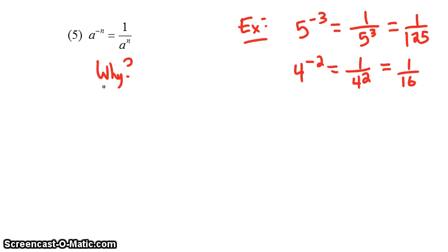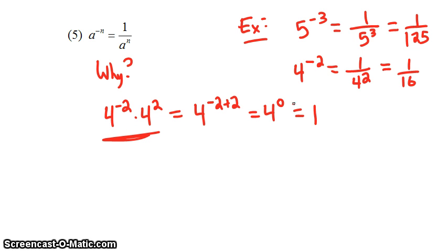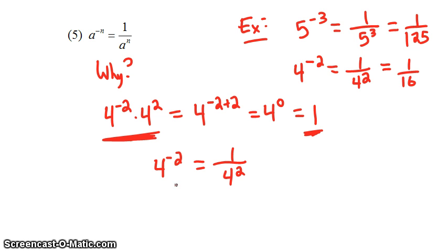Why do we define a to the negative n to equal 1 over a to the n? One way to look at this is to take 4 to the negative 2 and multiply it by 4 to the positive 2. According to the first rule, this should equal 4 to the negative 2 plus 2, or 4 to the 0 power. But 4 to the 0 power, according to the previous rule, is 1. So 4 to the negative 2 times 4 to the positive 2 is equal to 1. Dividing both sides by 4 squared, we get 4 to the negative 2 is equal to 1 over 4 squared.